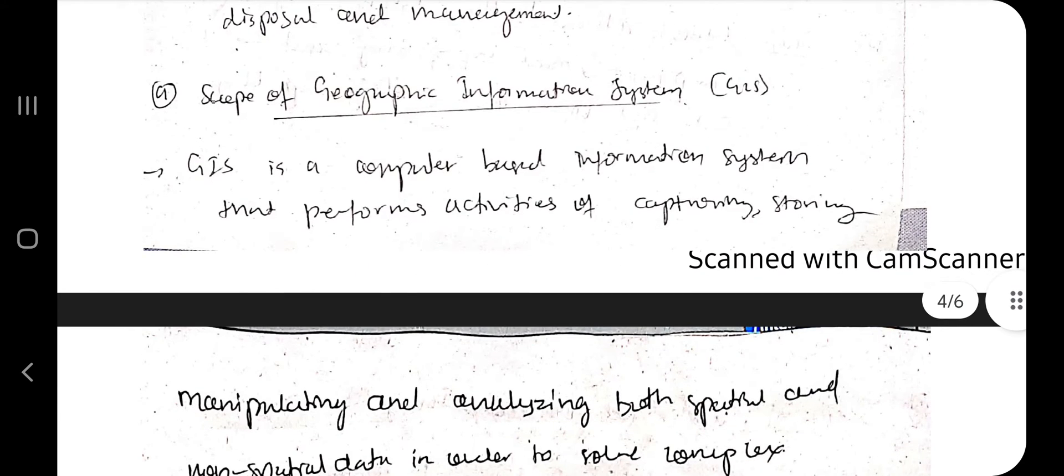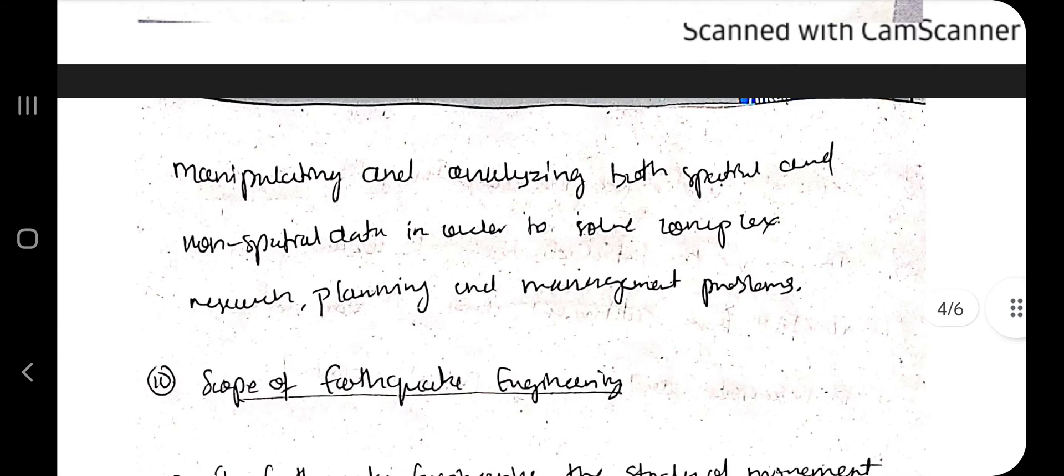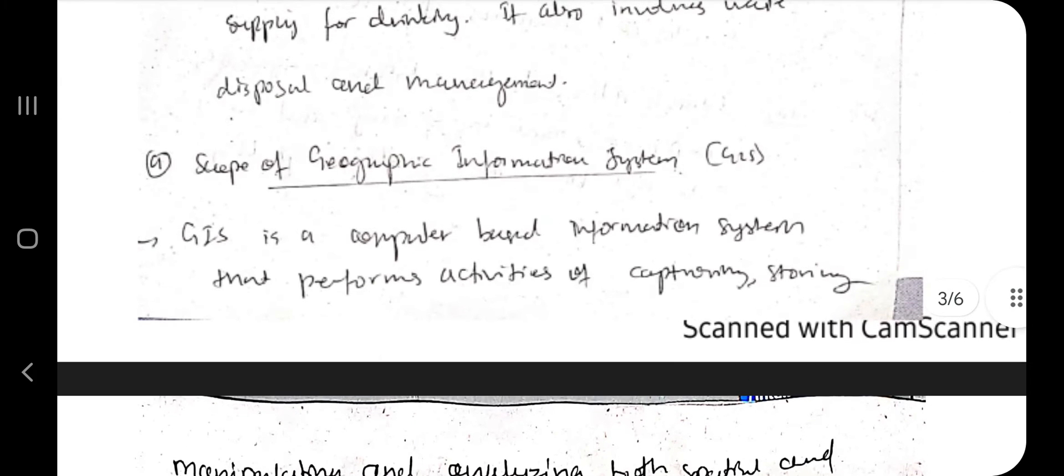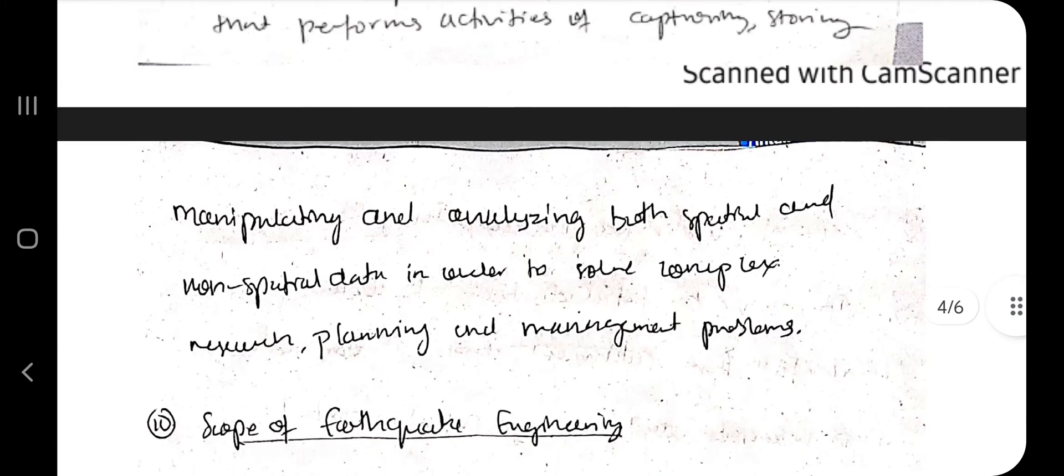Geographic Information System (GIS) is about satellite technology. It captures information from maps and places on earth, using spatial and non-spatial data to solve complex research, planning and management problems.